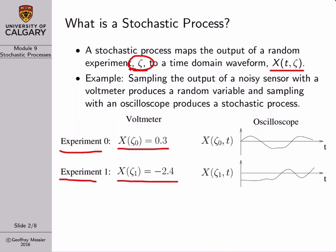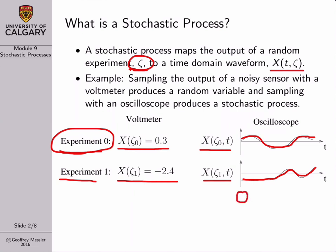You can think of a stochastic process as being generated by essentially the same experiment, but rather than sampling the output of our noisy sensor with a voltmeter, we instead sample with an oscilloscope. For the first trial of our experiment, we sample the output of our noisy sensor with an oscilloscope and get some sort of time-domain waveform representing the voltage at the output of the sensor.